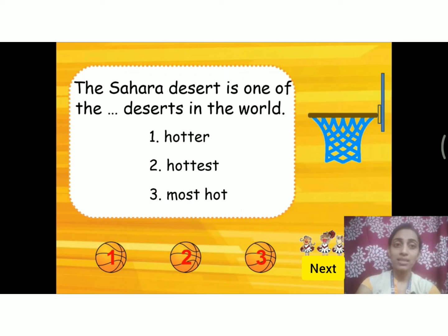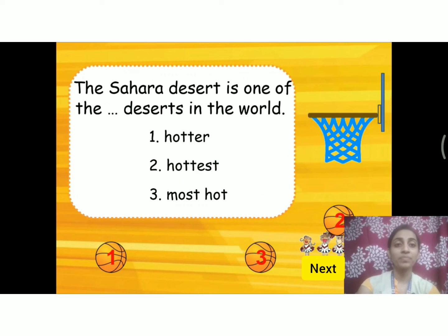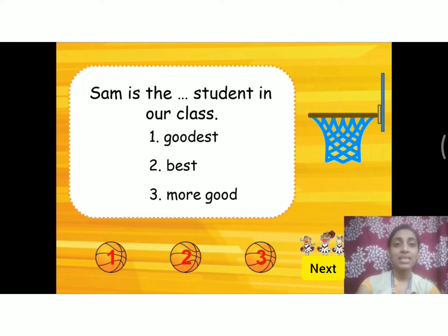The Sahara Desert is one of the _____ deserts in the world. 'The' indicates superlative degree. The superlative form of 'hot' is 'hottest', spelled H-O-T-T-E-S-T. Why? Because 'hot' is in the CVC form — H is consonant, O is vowel, T is consonant — so we double the last consonant and add -est. Very good.